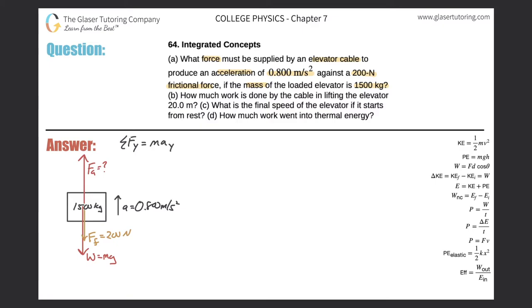All the y-forces are: the applied force pulling up, the weight pulling down, and the frictional force opposing motion in the negative y-direction. Plugging in the forces: the applied force minus the force of friction minus the weight equals mass times acceleration in the y-direction. To solve for the applied force, we add those two terms to the right-hand side, giving: F_applied = m·a_y + F_friction + mg.